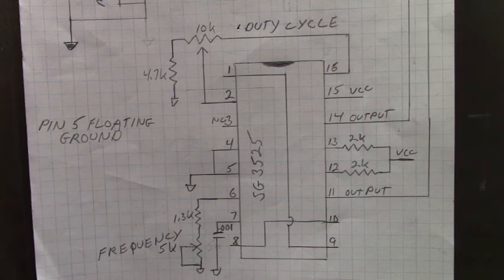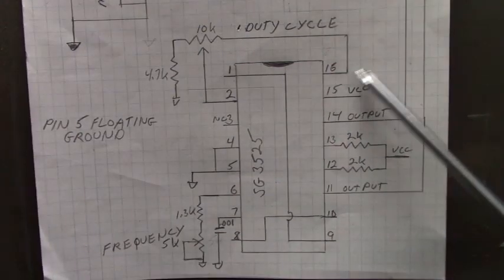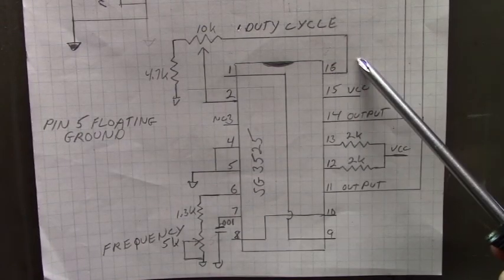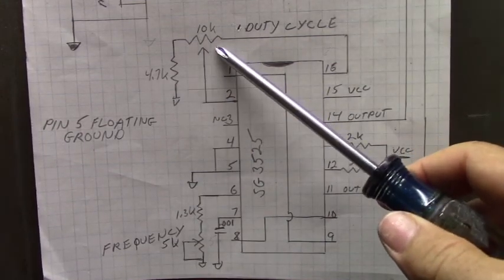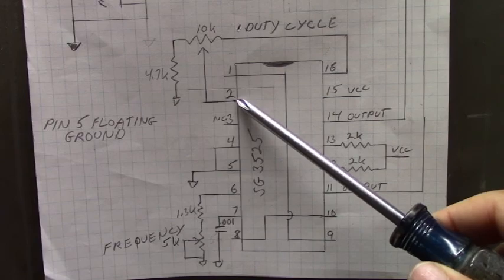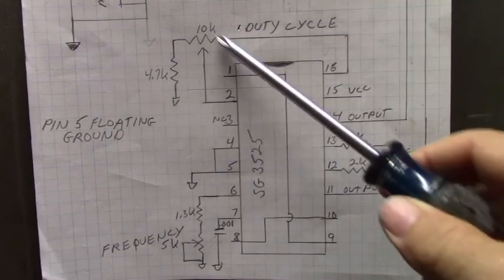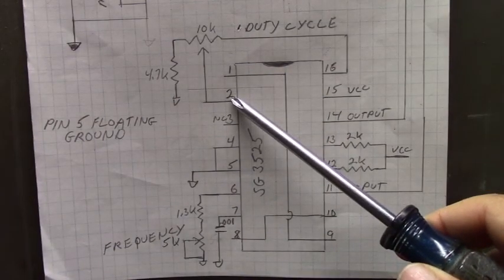Now we'll go over the design schematic. Pin 16 is a 5 volts reference. That goes to a voltage divider. We work off of that for the duty cycle control, so that adjusts the voltage on that.